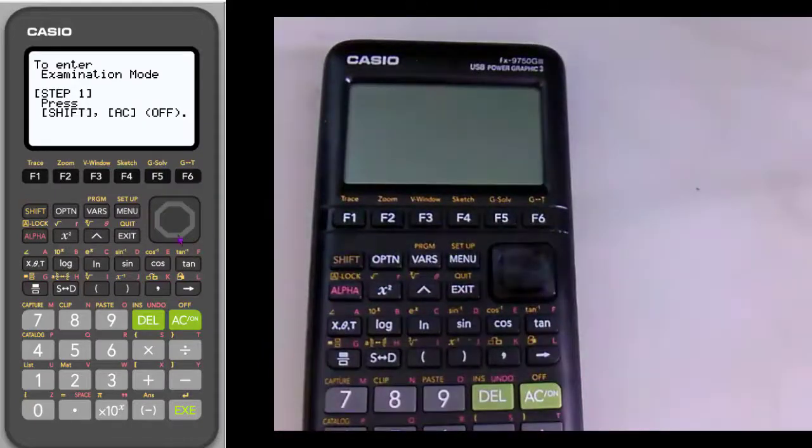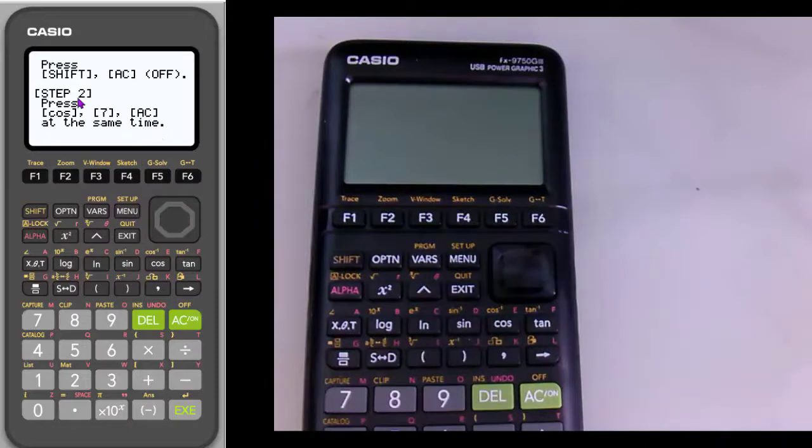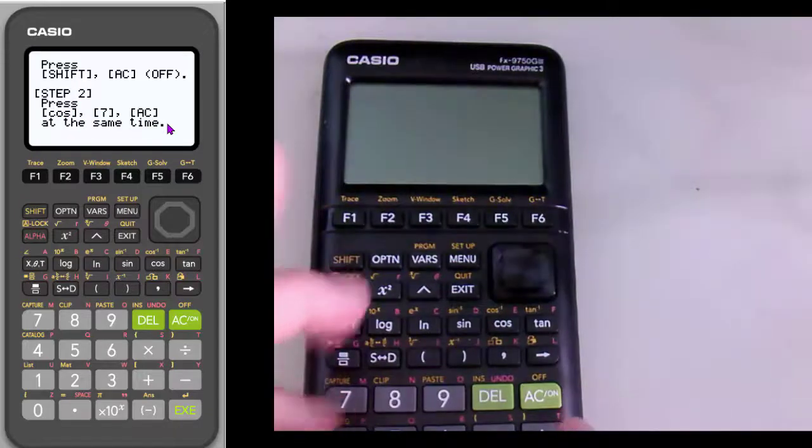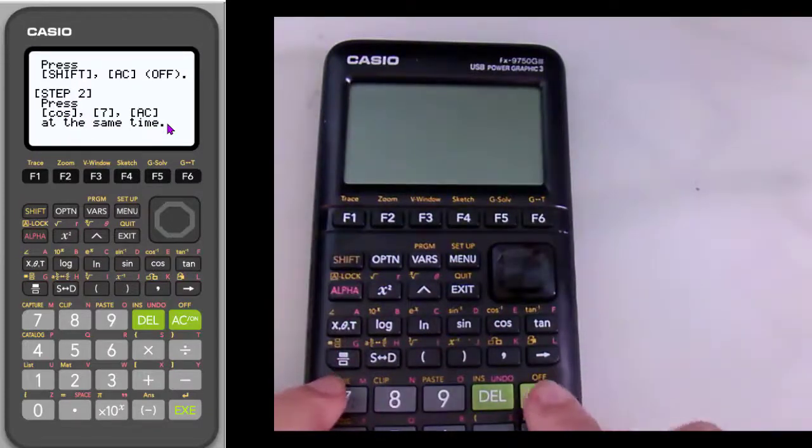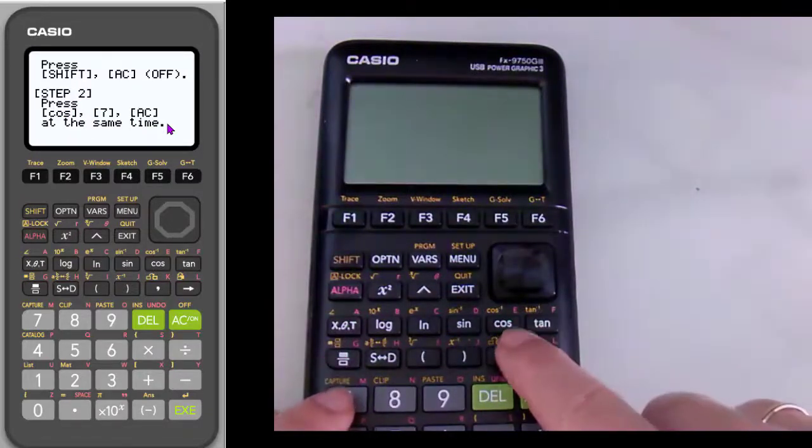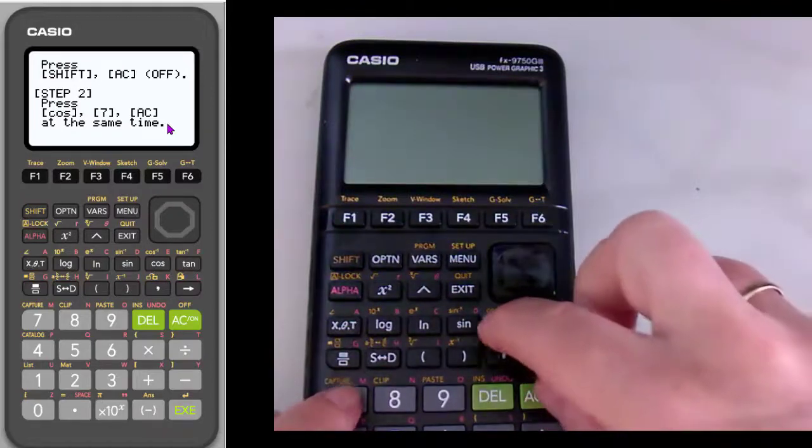And so let's scroll down on the emulator here to the next step. And notice that the next step is you need to hit three buttons at the same time. So I need to try to make sure I hit these three buttons at the same time. So here's my seven. Here's the cosine button. And here's the all clear. So let's hit all of them at once.